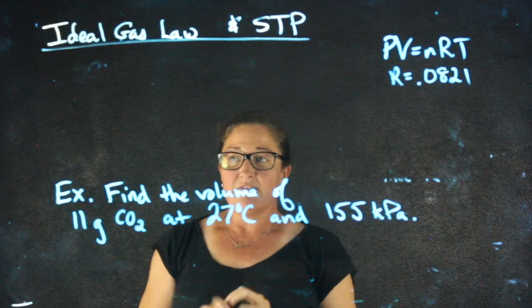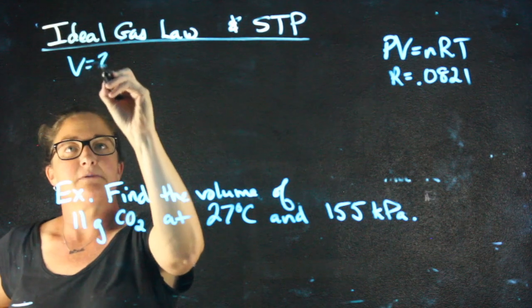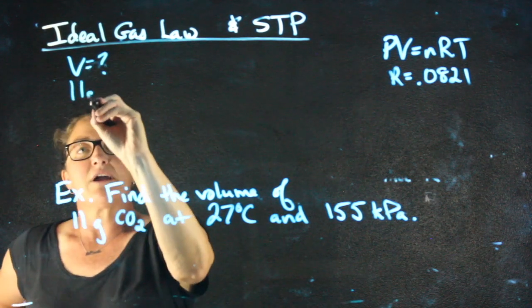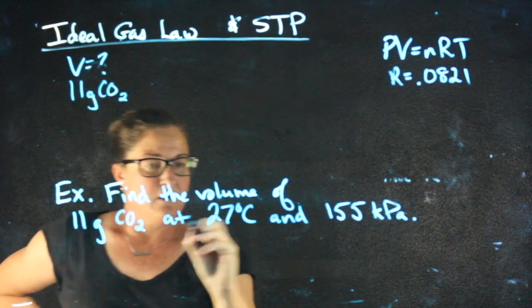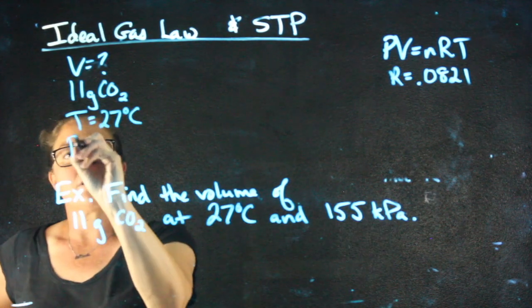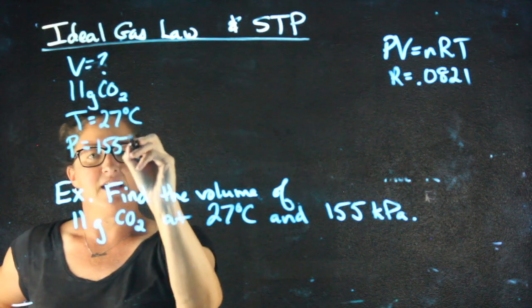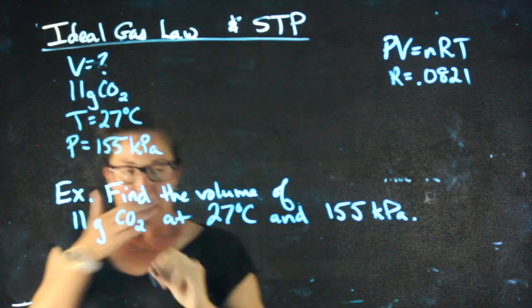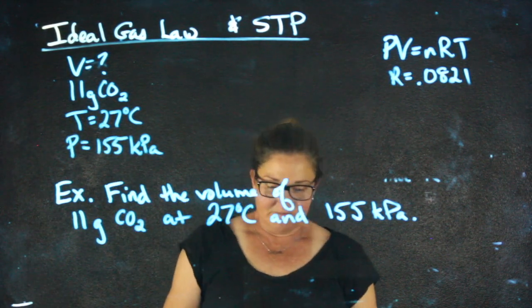Okay, so find the volume, V equals question mark. I know that we have 11 grams of CO2. I know that my temperature is 27 degrees Celsius and my pressure is 155 kPa. I need to check units.